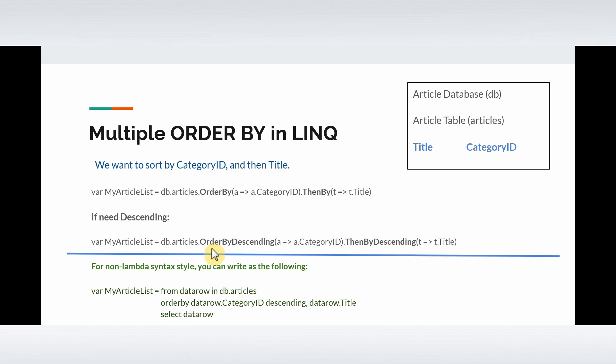If we need descending order, we can change the keyword to OrderByDescending. For non-lambda query syntax, you can write it as: from dataRow in db.Articles orderby dataRow.CategoryId descending, dataRow.Title, then finally select dataRow.